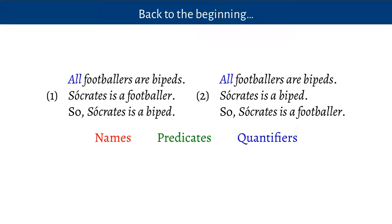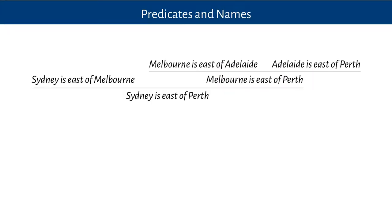We're going to look at a way of describing how predicates, names, and quantifiers can be combined to make sentences — some very simple ones, like 'Socrates is a footballer', 'Socrates is a biped', 'all footballers are bipeds', 'some footballers are bipeds', 'no footballers are bipeds', and things like that. But we'll also see how we can combine them to make much more complicated sentences. But before we do that, let's have a look at how they might feature in reasoning.